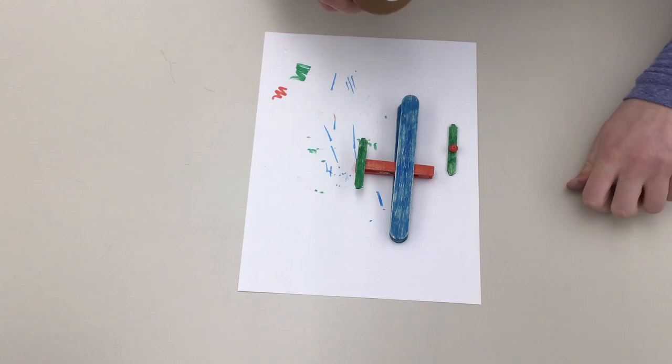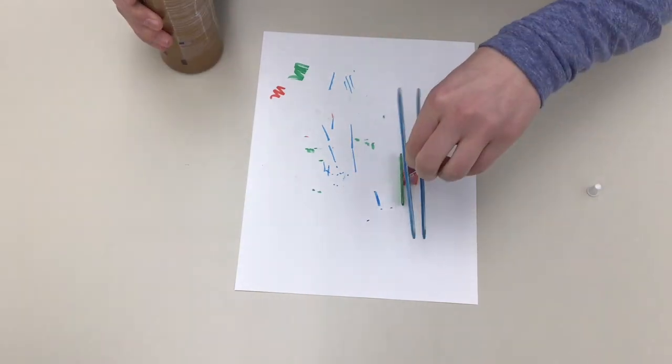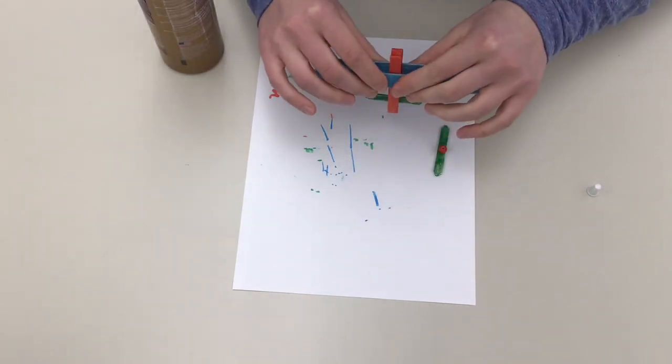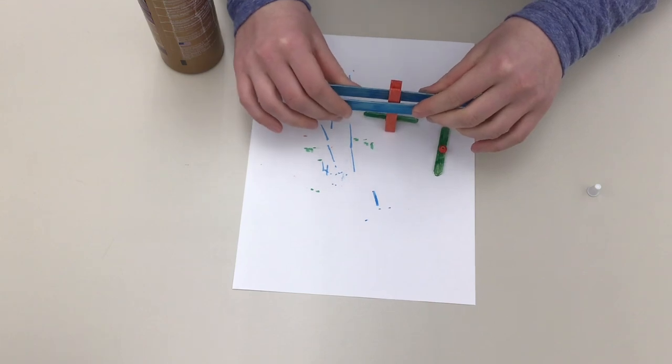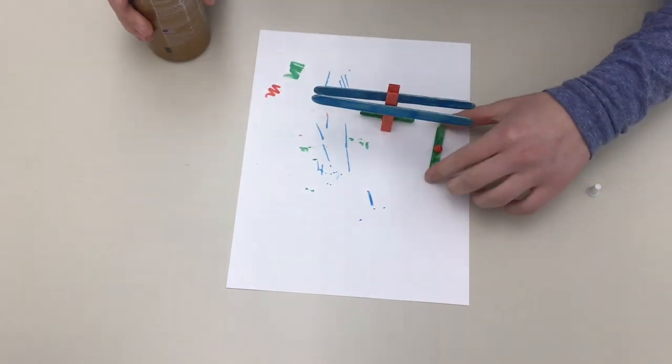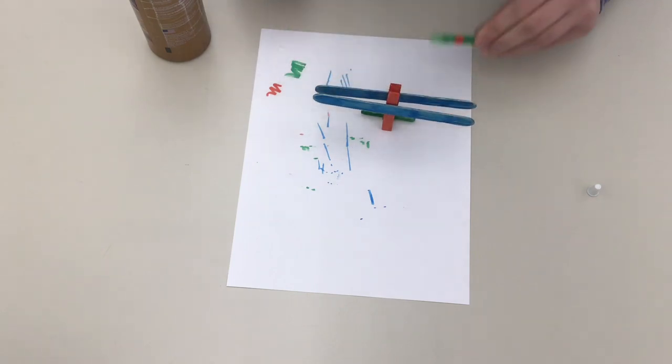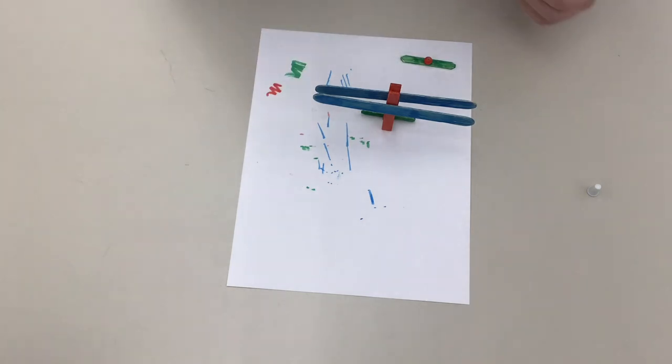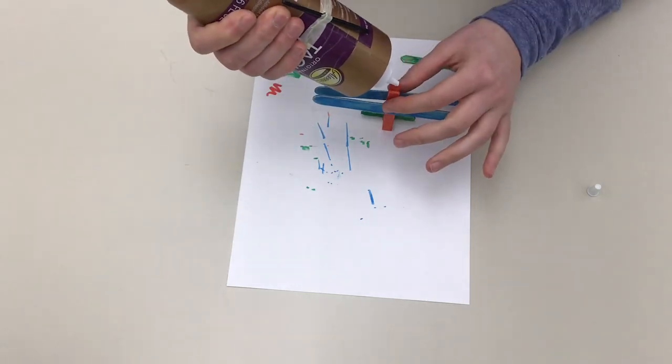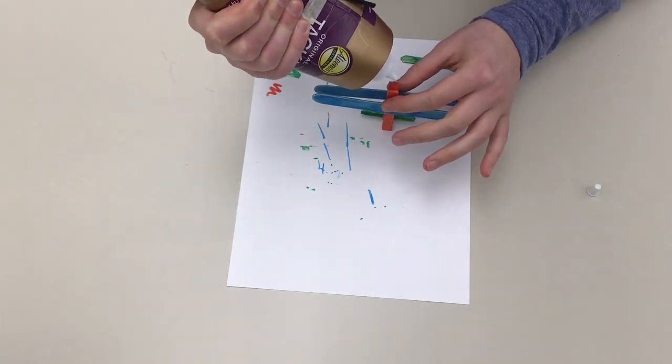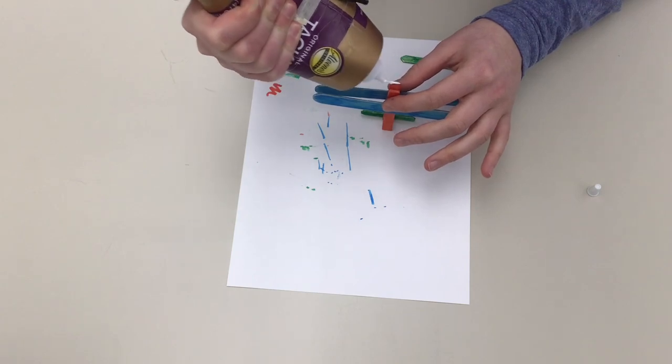Once all the parts are dry, we can add the propeller. Just tip your body of your plane up like this. Oh, looks like my wings aren't exactly square. That's okay. To add the propeller, we're going to add glue to one flat part of the clothespin. So on the end of the clothespin, there's two flat parts. You don't want to put the glue in the middle because that would take a lot of glue to fill up the space there. You just want to add glue to the top part, the top flat part.